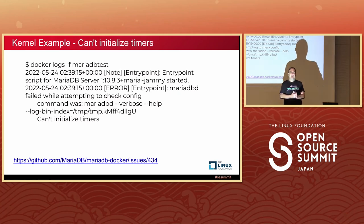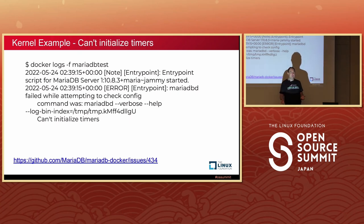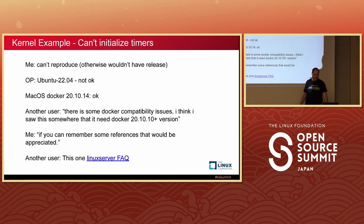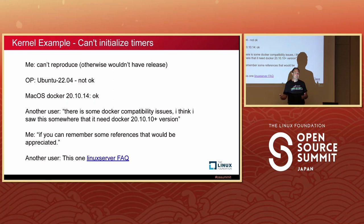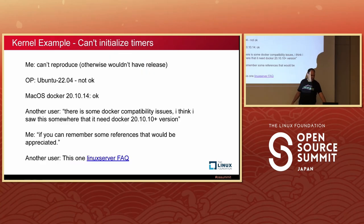Another error I encountered was when I changed the MariaDB base image to an Ubuntu Jammy image that I'd tested locally — it worked fine. But immediately after release into a stable version, users reported an error they couldn't explain. I couldn't reproduce it either. Eventually through discussion it became clear that OSX was fine but something else wasn't, and someone worked it out by consulting the Linux FAQ.